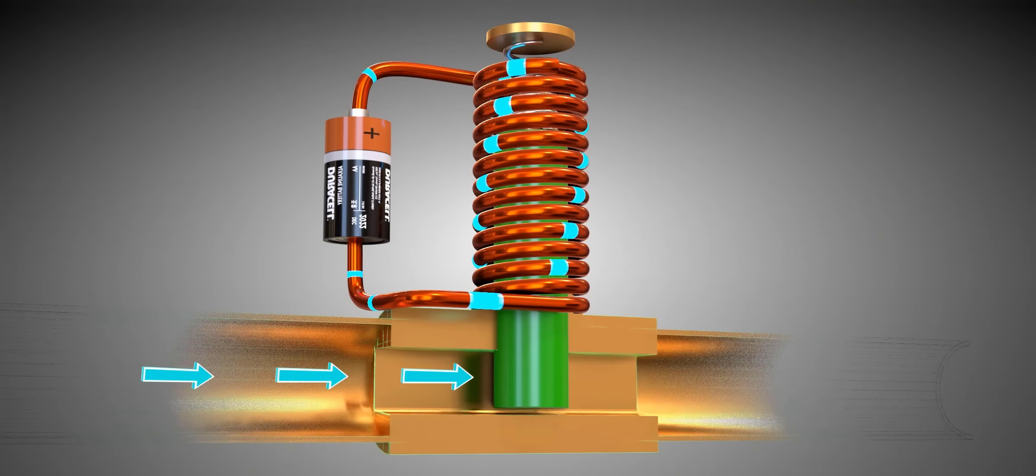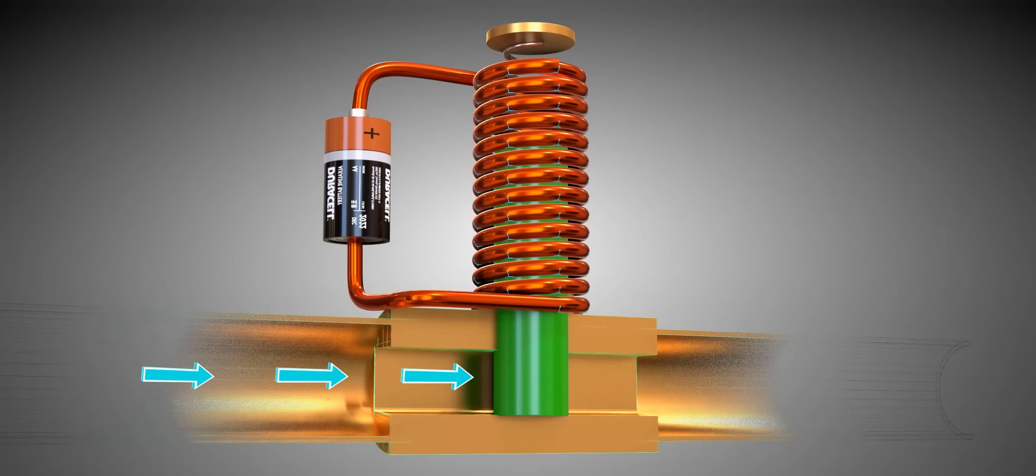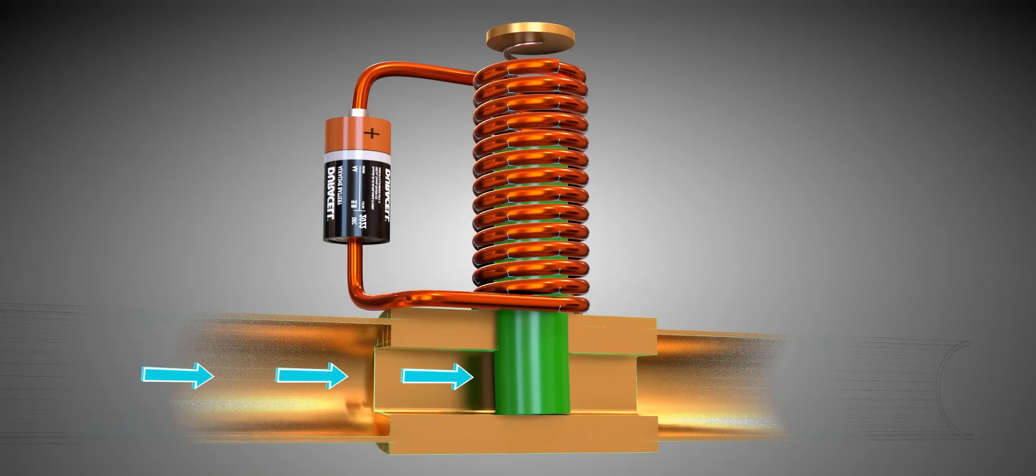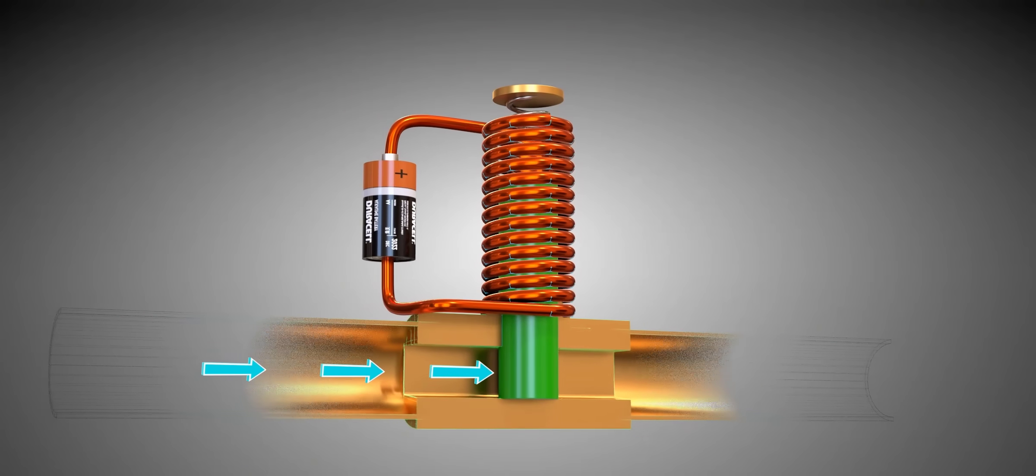Our basic design of a solenoid valve is ready to control some fluid flow. But there is a small issue. Due to the fluid pressure, in off state, the armature can bend, resulting in fluid leakage. Let's make some design modifications to make it more practical.